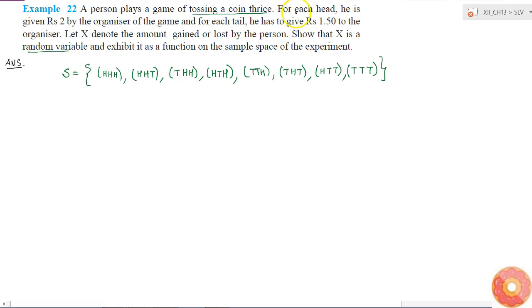Now, what is given? For each head, the person is given Rs. 2 by the organizer of the game and for each tail, he has to give Rs. 1.5 to the organizer. And what is given? X denotes the amount gained or lost by the person. Therefore, what is X?